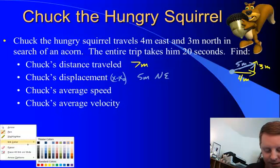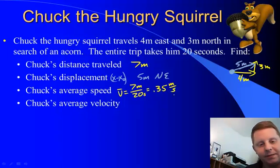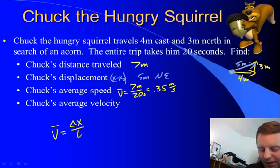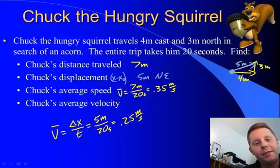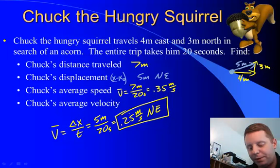Chuck's average speed is distance traveled divided by time, or 7 meters in 20 seconds, which is 0.35 meters per second. Chuck's average velocity is the rate of change of displacement, the total displacement divided by time. That was 5 meters in 20 seconds, or 0.25 meters per second. And since velocity is a vector, it needs a direction northeast. So 0.25 meters per second northeast is Chuck's average velocity. Some very subtle differences in these different quantities in physics.